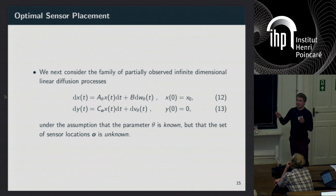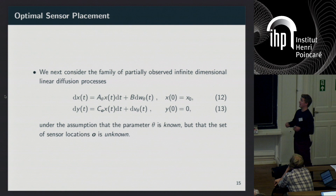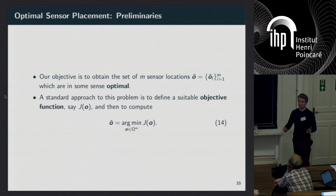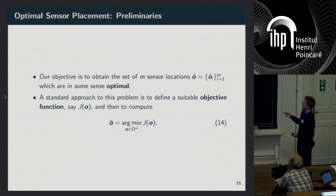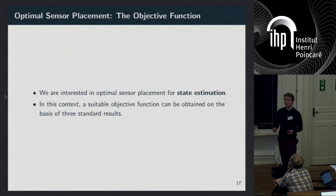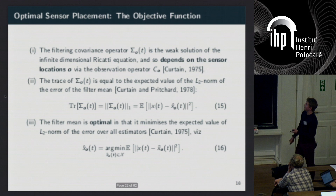Now let's look at the other problem: optimal sensor placement. We go back to the model and now assume that theta is known but the sensor locations O are yet to be determined. We define some objective function as a function of the sensor locations, and say our optimal locations are the values of O which minimize this objective. We're interested in minimizing the uncertainty in our filtering state estimate.